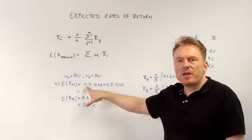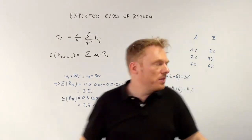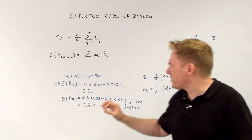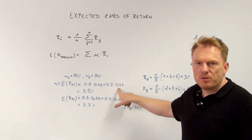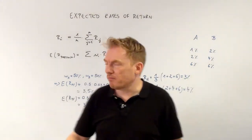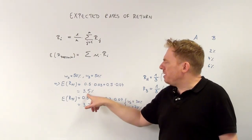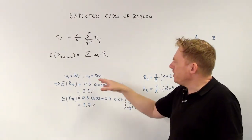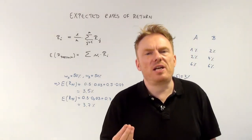So: weight of share A, 0.5, multiplied by the expected return of share A, plus 0.5 multiplied by the expected return of share B — which is 4% — gives us the expected return of the portfolio: 3.5%. That's the result for a 50/50 split.